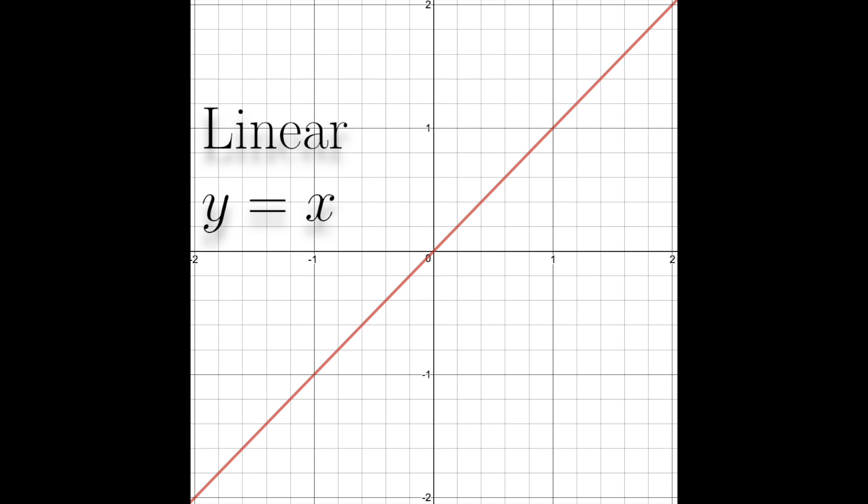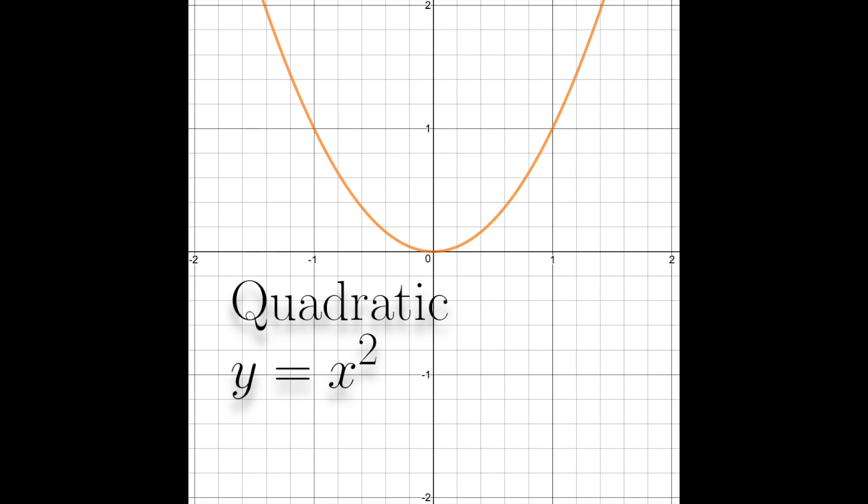Okay, linear is of the form y equals x. You're going to notice it's just a simple graph, just a straight line. Quadratic is y equals x squared—you're going to notice a parabola on this.